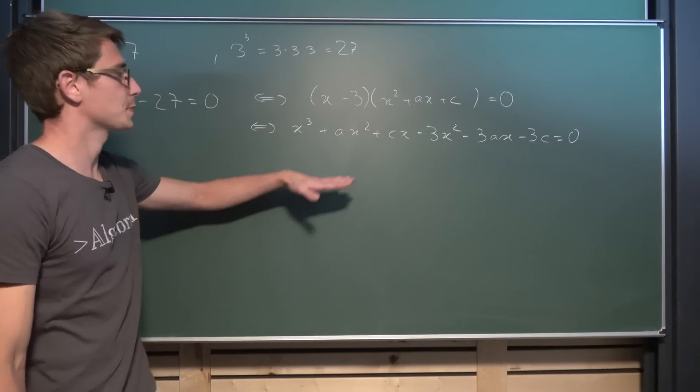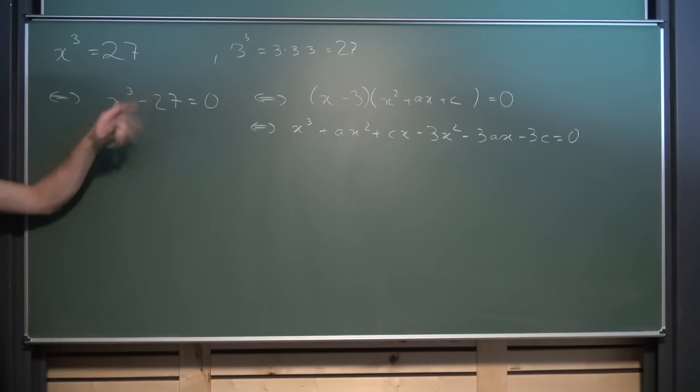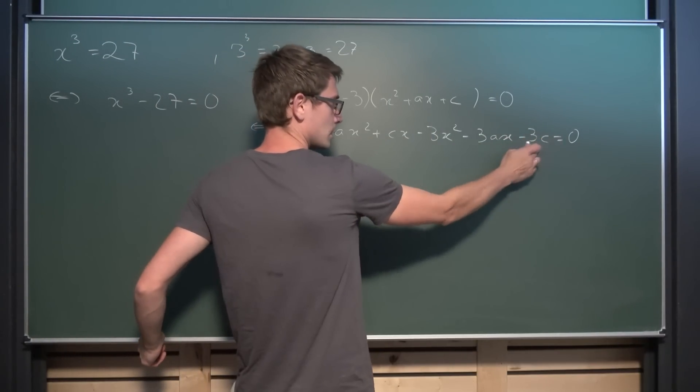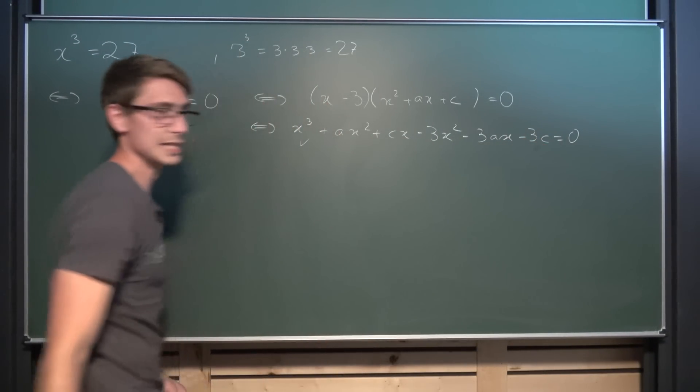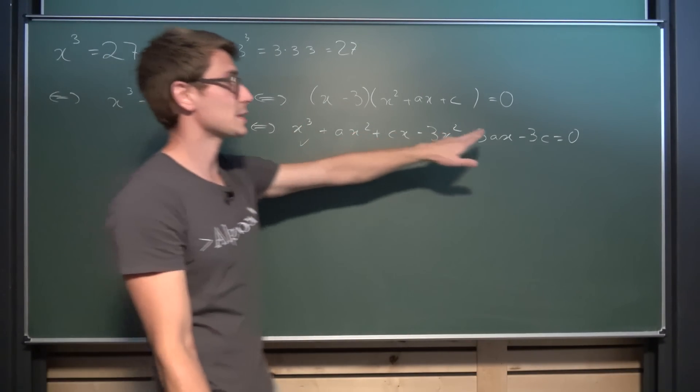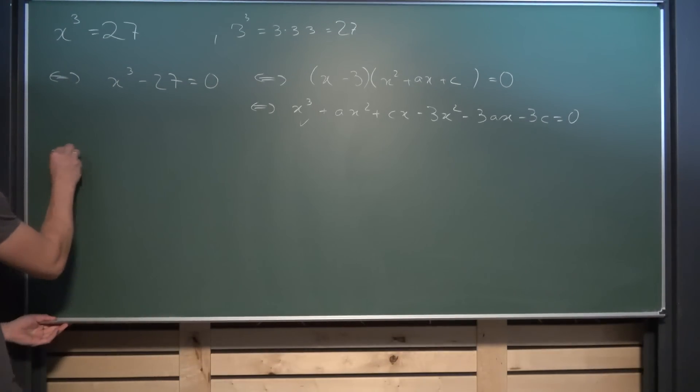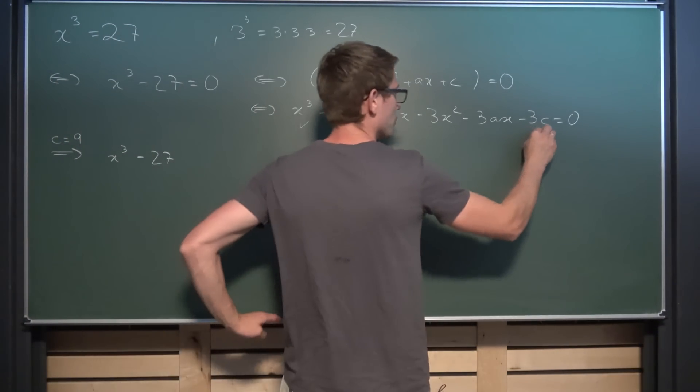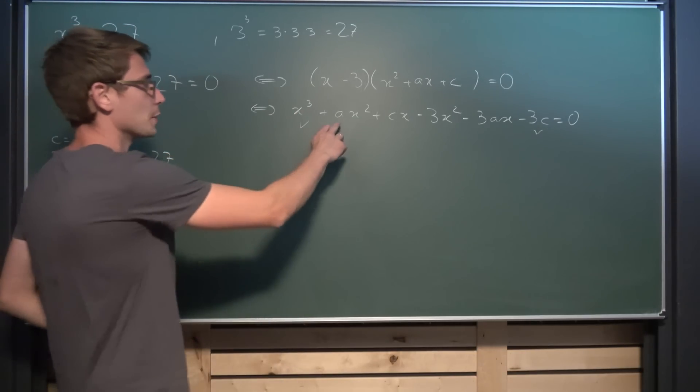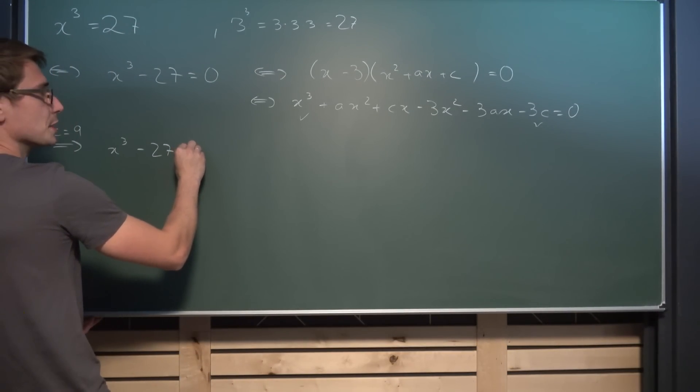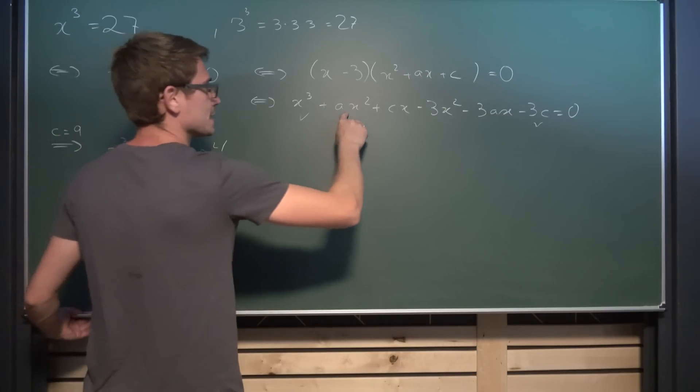Now we are just going to compare coefficients because this polynomial must be equal to this one right here. The leading coefficient is already good so this part works out. The only thing without an x is negative 3c and we know what this must amount to, namely to negative 27. Hence c must be equal to 9 for this to hold. c is equal to 9 so we are going to end up with x cubed minus 27. But we also have other parts right here to consider. We have plus ax squared minus 3x squared. We can bring this together by factoring out the x squared and having in parentheses a minus 3.